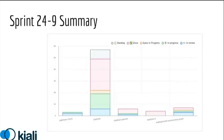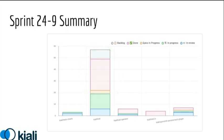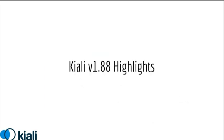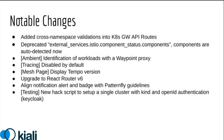The summary: nothing really earth-shattering here. Most of the work is being done in the server. We have done some small amount of work in the plugin and the operator, but this sprint was all about the server. Some notable changes — going down this list — we have new validations for cross-namespace validations. This is for the gateway work that we're doing.